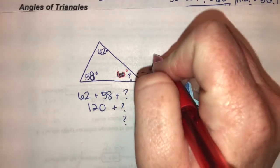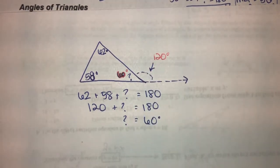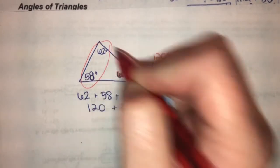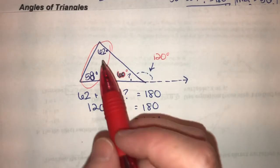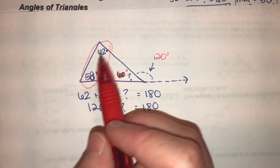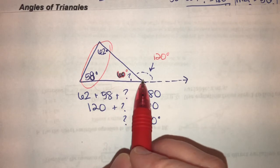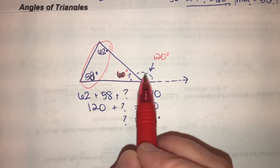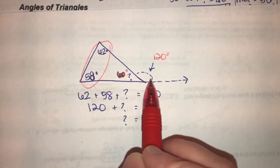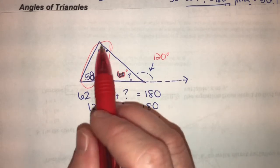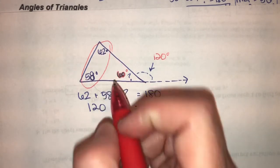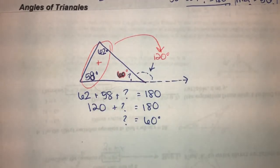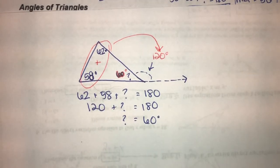So 60 plus this exterior angle has to be 120. In other words, these two remote interior angles — they're inside the triangle and remote because they're not touching this exterior angle — if we add these together, they add up to this outside angle.